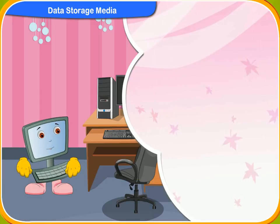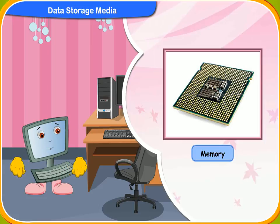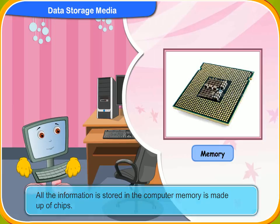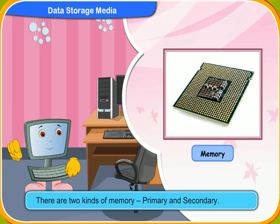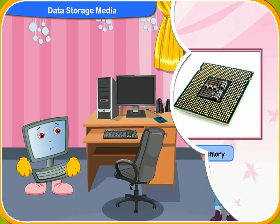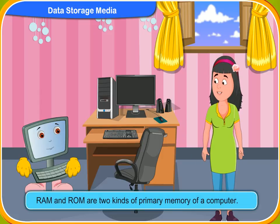Let us now look at the memory of a computer. The computer stores all the work done on it. All the information is stored in the computer memory, which is made up of chips. There are two kinds of memory: primary and secondary. RAM and ROM are two kinds of primary memory of a computer.